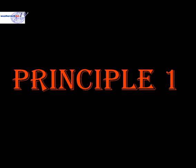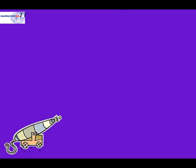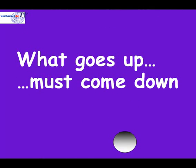So let's look at our first principle. Principle 1. And our first principle is quite straightforward. Take this cannonball — it's fired into the air. We know it must come down somewhere. So our first principle says that what goes up must come down. And this applies to air parcels in exactly the same way that it does to cannonballs or anything else that you throw up in the air. If a parcel of air is lifted in one place, then it must come back down to the surface of the earth somewhere else.